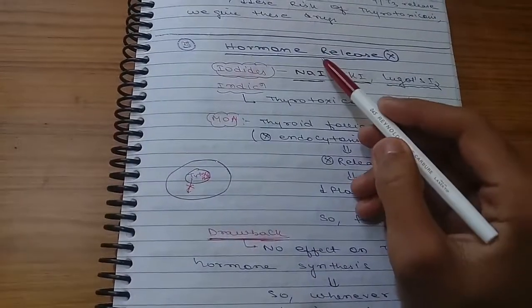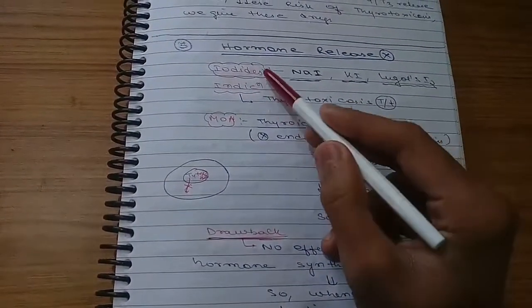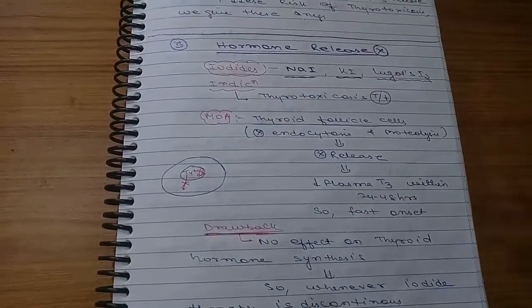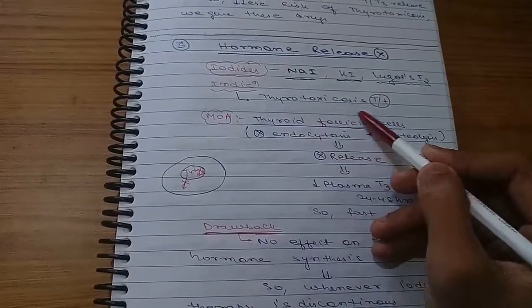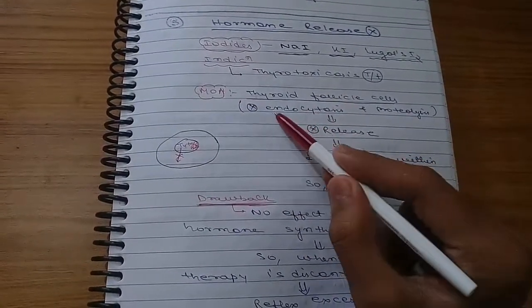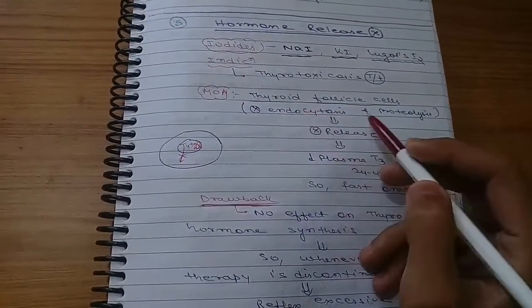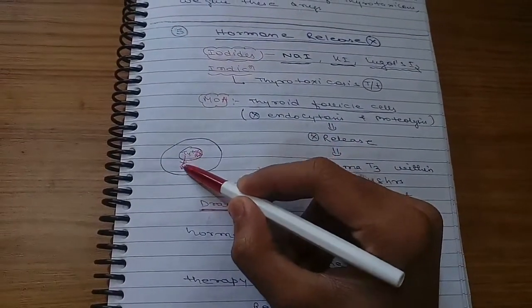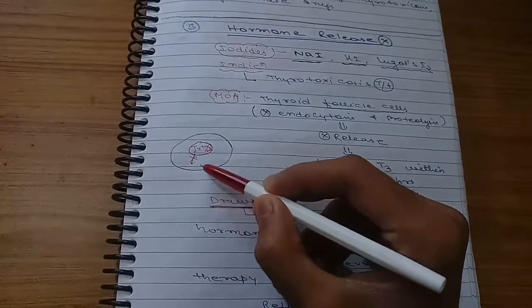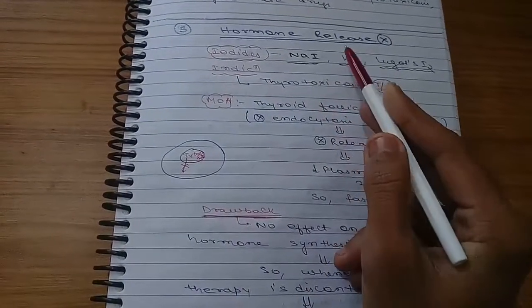The next one is hormone releasing inhibitor. It includes iodides as sodium iodide, potassium iodide, and Lugol's iodine. Indication is thyrotoxicosis treatment. Mechanism of action: it acts on thyroid follicle cells, inhibits endocytosis and proteolysis.